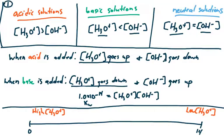The second important relationship you need to understand is that when acid is added to a solution, the hydronium ion concentration should go up. And as a result, the hydroxide ion concentration goes down. And the opposite is true when base is added. The hydronium ion concentration goes down, but the hydroxide ion concentration goes up. Why does this happen?